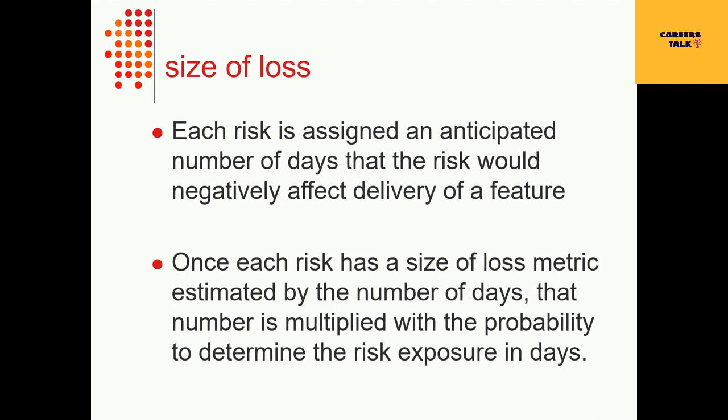As a next step, each risk is assigned an anticipated number of days that the risk would negatively affect delivery of a feature. If a feature does not have well-defined user stories and has been accepted into the next sprint, there could be a risk of delay in the number of days it will take to deliver the features. Once each risk has a size of loss metric estimated in days, that number is multiplied by the probability to determine the risk exposure in days.